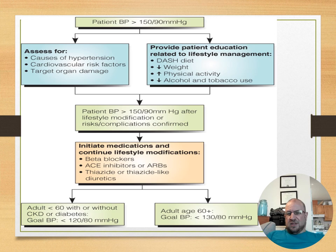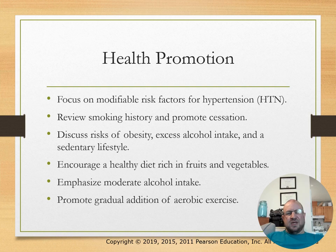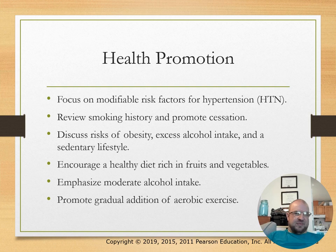For medications, important options for blood pressure include beta blockers, ACE inhibitors, and diuretics. The diagram gives goals for patients under 60 and over 60. Health promotion focuses on education and modifiable risk factors for high blood pressure: review smoking history and promote quitting smoking, discuss risks of obesity, excess alcohol, and a sedentary lifestyle, encourage a healthy diet, emphasize moderate alcohol intake, and promote gradual addition of exercise.